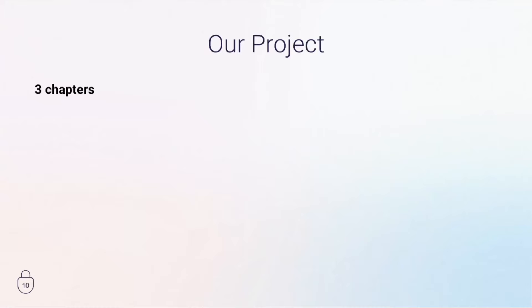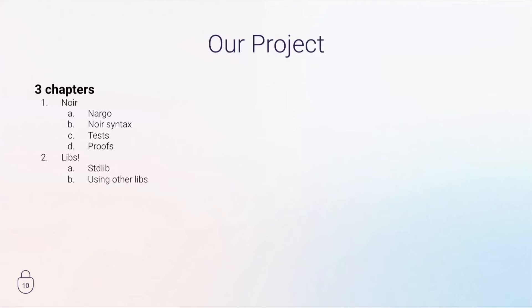Today we're going to be building a little project, divided into three chapters. The first chapter is about Noir itself — especially Nargo and NoirApp — how to get started with a new Noir project. I'm going to cover the syntax of Noir, writing tests, how to make them fail, and finally generating and verifying proofs. We'll also integrate some libraries including the standard library and external community libraries, and finally look at browser usage. You can still use Noir in your DApp and I'm going to show you how.